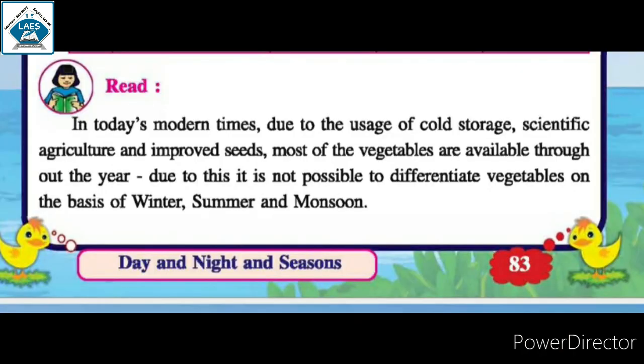In today's modern times, due to the usage of cold storage, scientific agriculture and improved seeds, most vegetables are available throughout the year. Due to this, it is not possible to differentiate vegetables on the basis of winter, summer and monsoon.